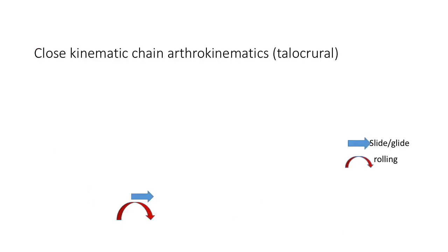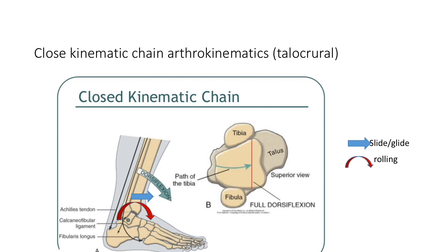During closed kinematic chain, the tibia moves on the talus — that is, the concave surface moves on the convex surface. During dorsiflexion, the tibia moves anteriorly and its surface also slides anteriorly because the tibial surface is concave. During plantar flexion, the tibia moves posteriorly and its surface also slides posteriorly.